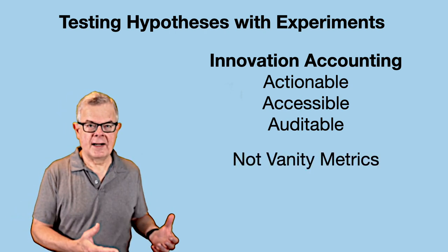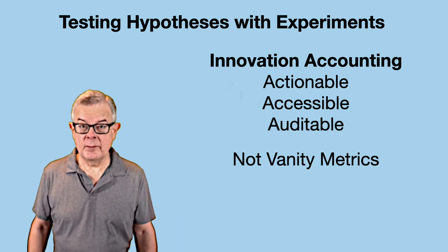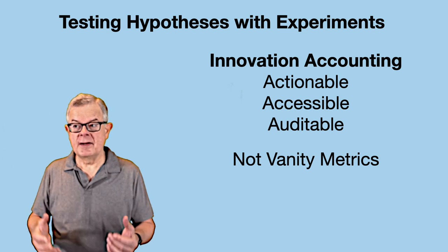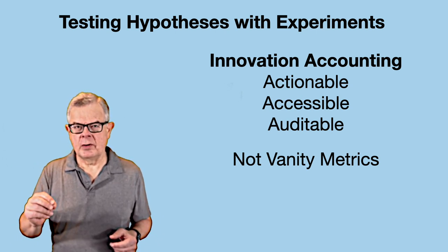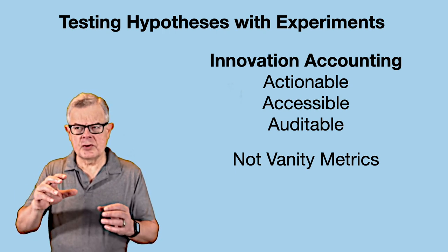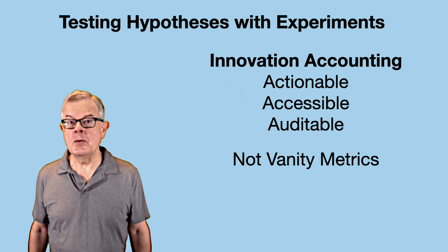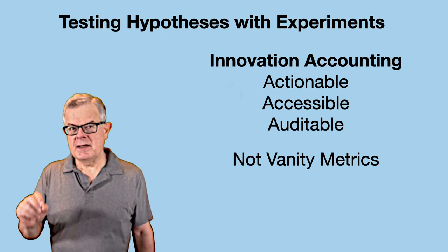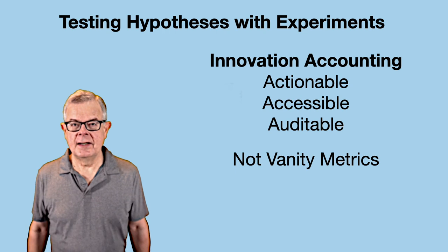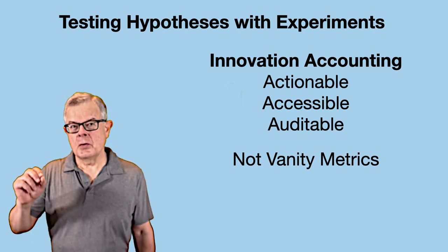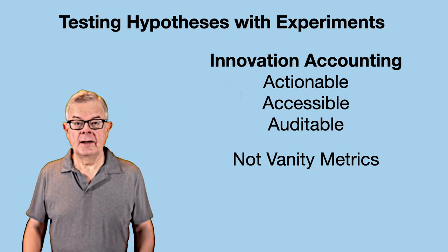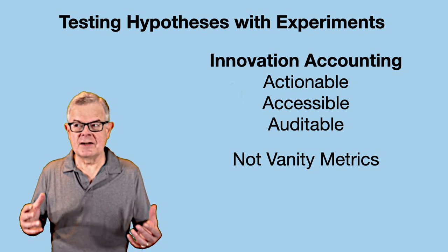These are not vanity metrics. A vanity metric is something that might make you feel better but isn't actionable — for example, looking at total revenue, which might be going up but doesn't give you anything actionable. If you look at underlying metrics like customer conversion rates, maybe your revenue is going up but conversion rates are declining — that's a sign of a problem ahead. That's actionable: you know what needs to be addressed to stop the eventual decline in revenue.